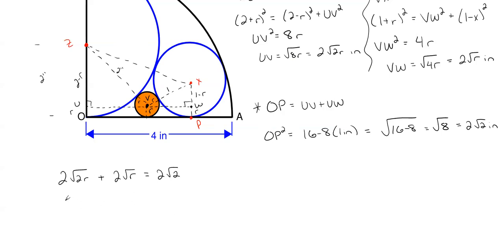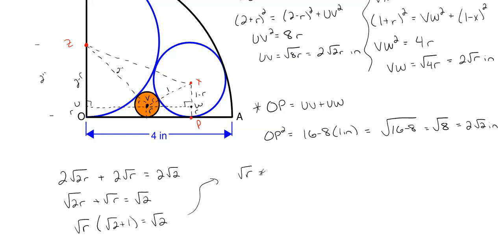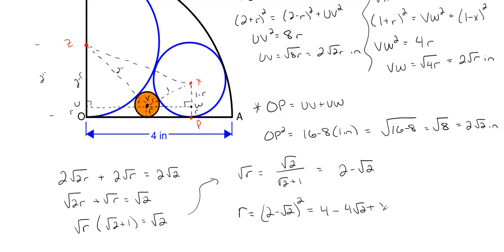We can remove the factor of 2 from everything, leaving √(2r) plus √r equals √2. Pulling √r out: √r times (√2 plus 1) equals √2. So √r equals √2 divided by (√2 plus 1), which simplifies to 2 minus √2 using algebra. Squaring both sides, r equals (2 minus √2) squared, which equals 4 minus 4√2 plus 2, giving a radius of 6 minus 4√2 inches.